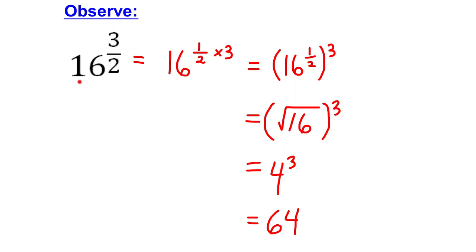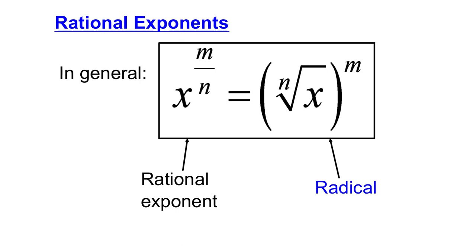16 to the exponent 3 over 2 is the same as 16 to the exponent 1 over 2 to the exponent 3. So, I can rewrite my rational exponent as a radical with an exponent. The denominator of the fraction in my exponent tells me what kind of root I'm taking — in this case it was a 2, which is a square root. The numerator of the exponent tells me what the exponent is on that radical. So, if you have a rational exponent, you can rewrite it as a radical again. But if the numerator is other than 1, you can just put an exponent on your radical. In general, a rational exponent of m over n can be rewritten as the radical — the nth root of x — to the exponent m. Notice: the denominator is the type of root, and the numerator is the exponent on your radical.